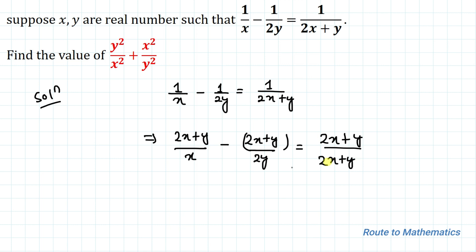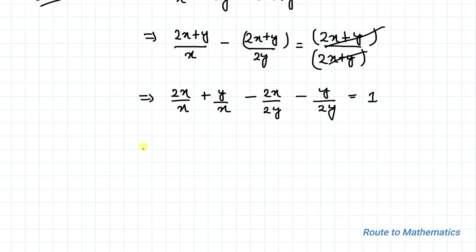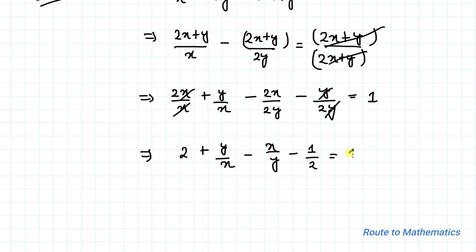This implies 2x/x + y/x minus 2x/(2y) minus y/(2y) equals 2x+y. On the right side, the (2x+y) terms cancel out, giving us 1. Then xx cancels and yy cancels, so we have 2 + y/x minus x/y minus 1/2 equals 1.